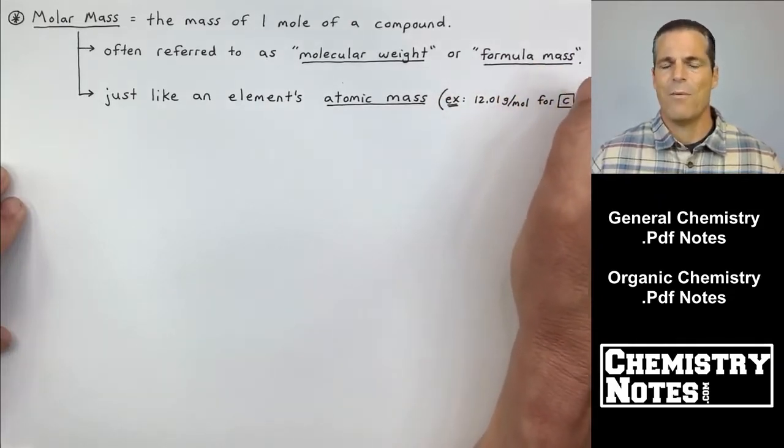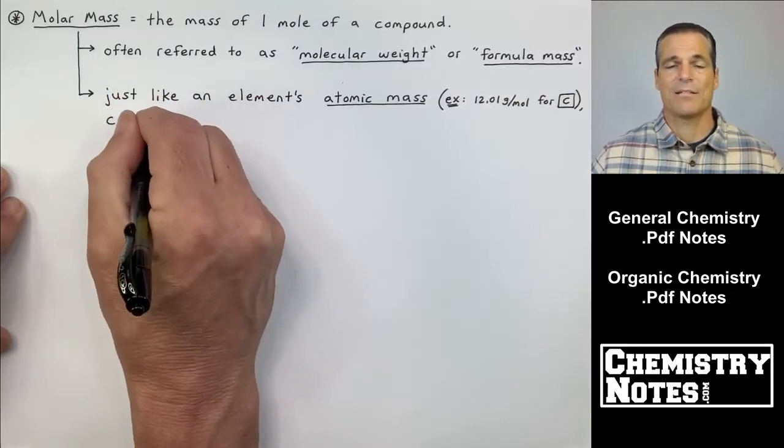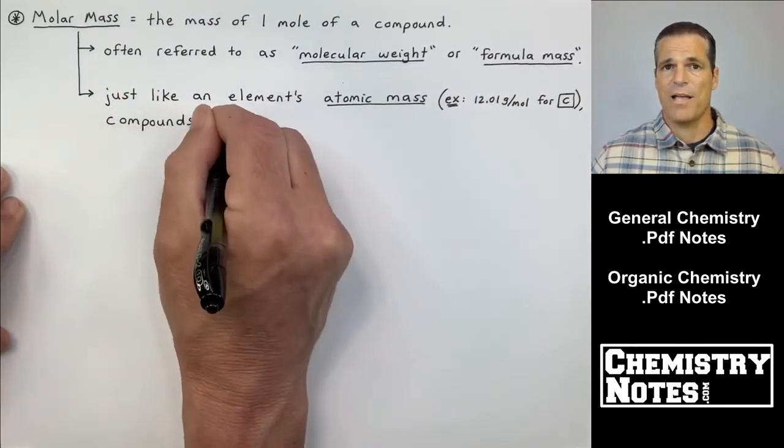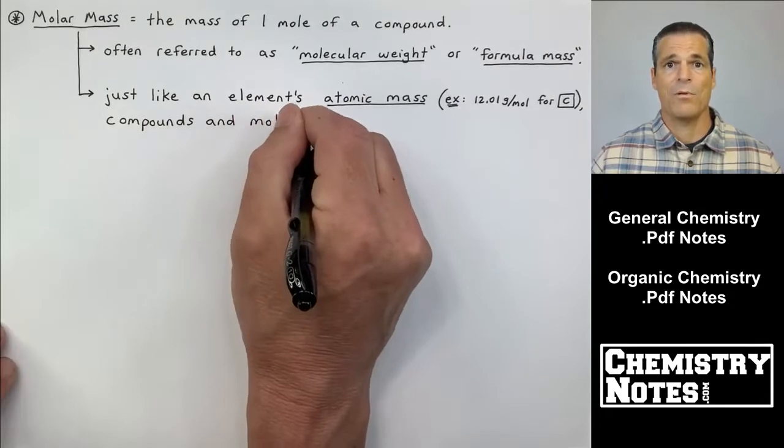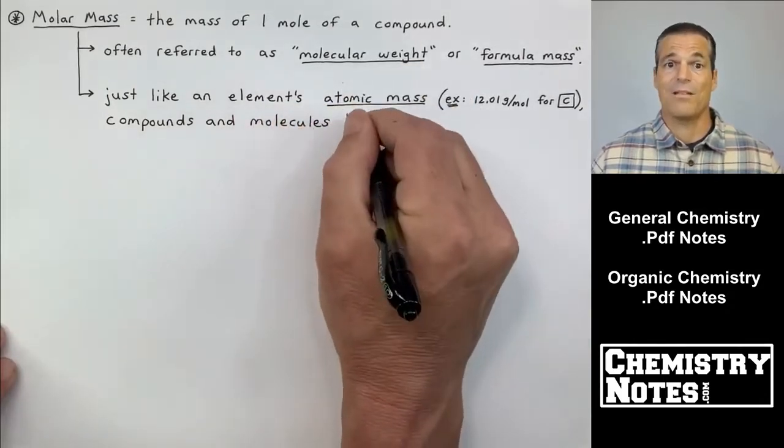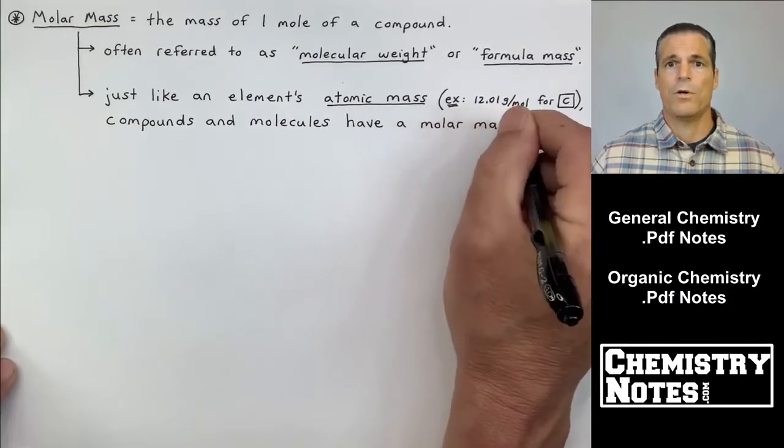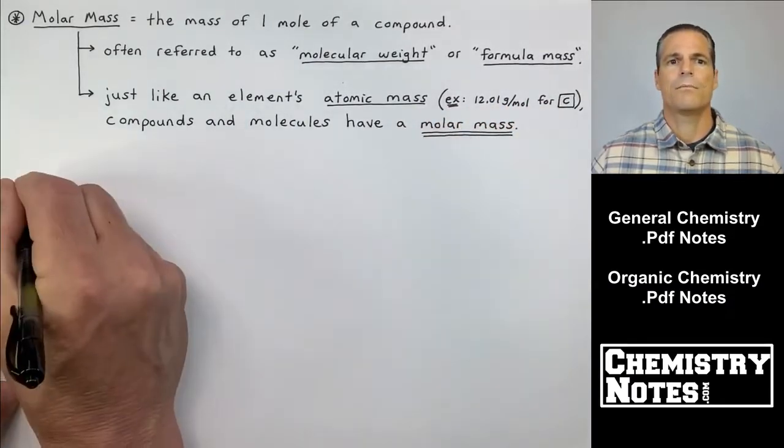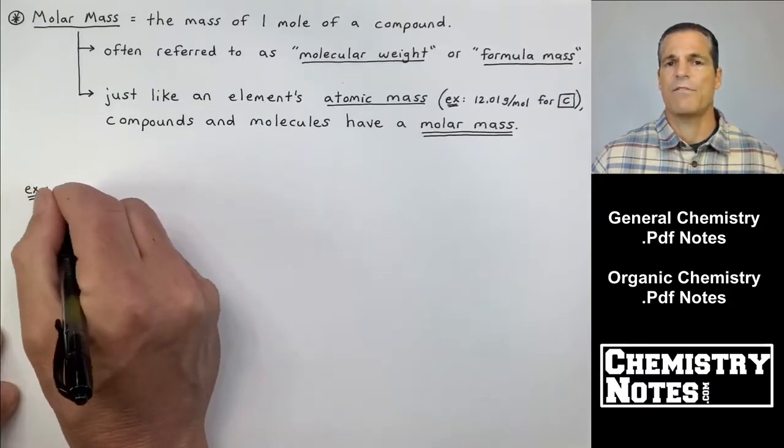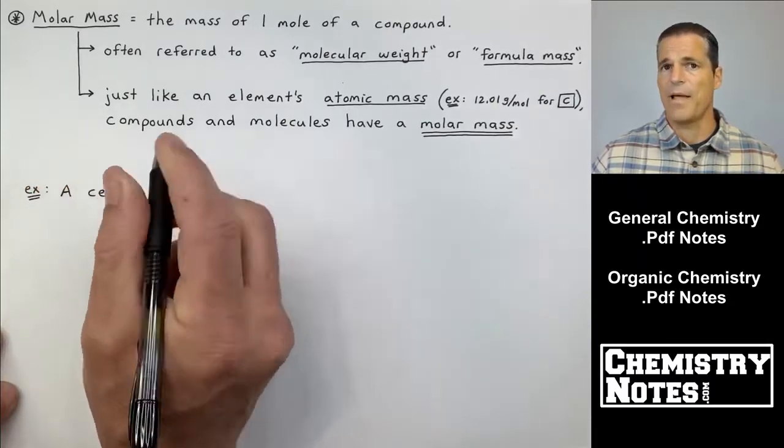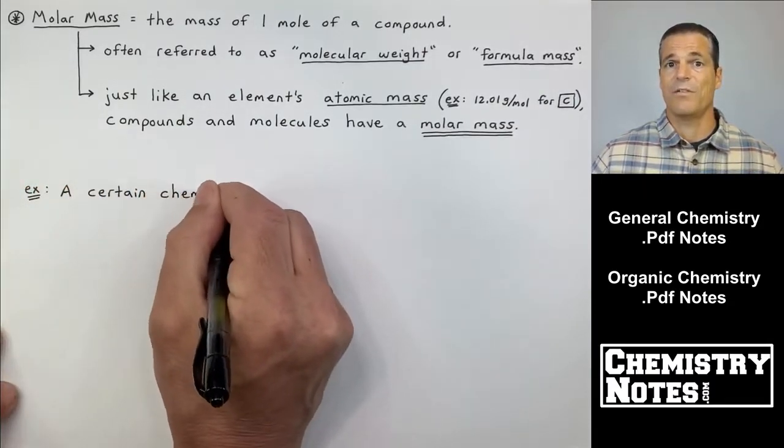Molar mass is really almost identical to calculating atomic mass. You don't even calculate atomic mass, right? You just look at the periodic table, you find the decimal number, and that's the element's atomic mass. For example, carbon 12.01 grams per mole.